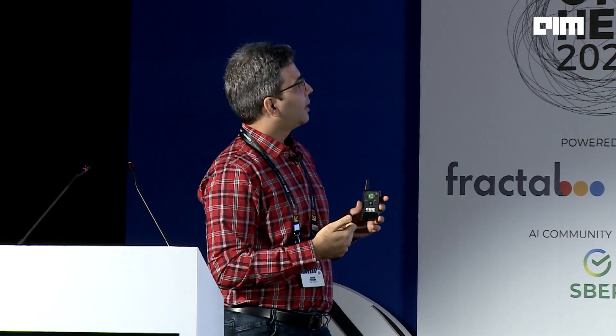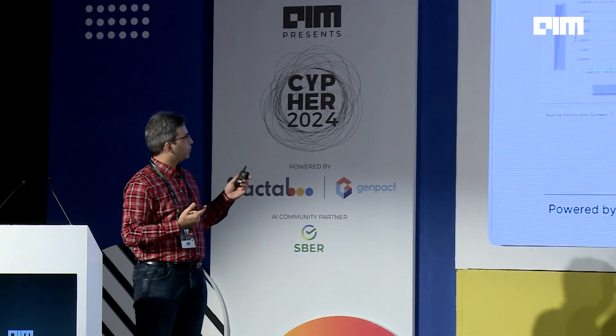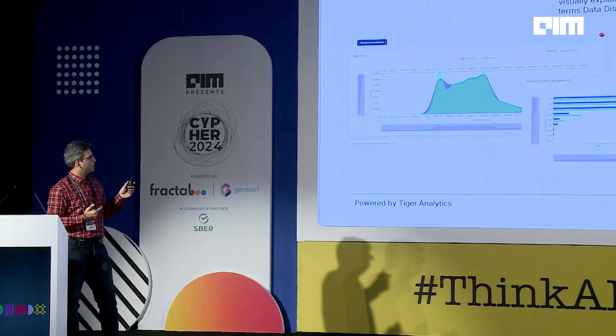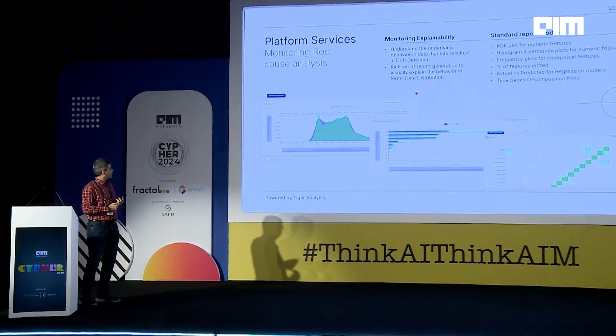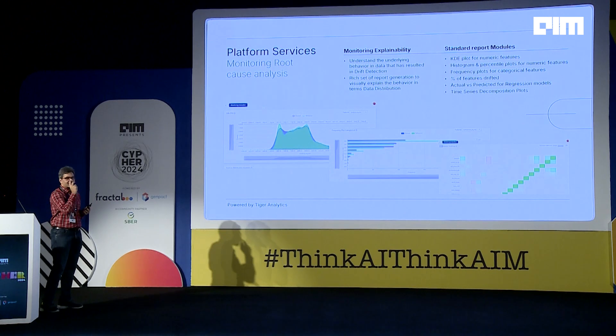Once monitoring jobs are set, they run at daily, weekly, or whatever level you configure. When a drift is detected — for a certain feature or model — the platform provides monitoring explainability, not model explainability. The platform generates kernel density estimator PDFs comparing current versus reference values across all features. You can look across features and timeframes, and generate histograms and frequency plots for categorical features.